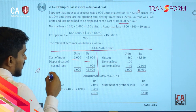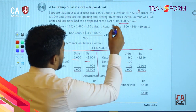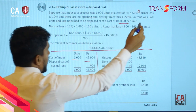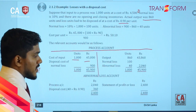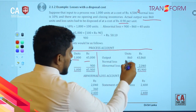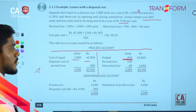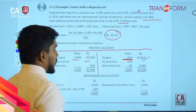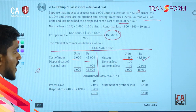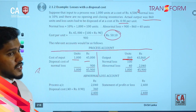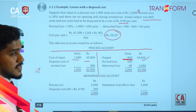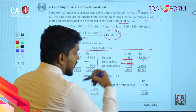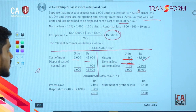When it comes to the output, they have mentioned actual output as 860 units. You can take the output value, and since you have calculated the cost per unit, you can multiply and take the value. For normal loss: we had 1,000 units and normal loss is 10 percent, so normal loss is 100 units — same as the previous one.